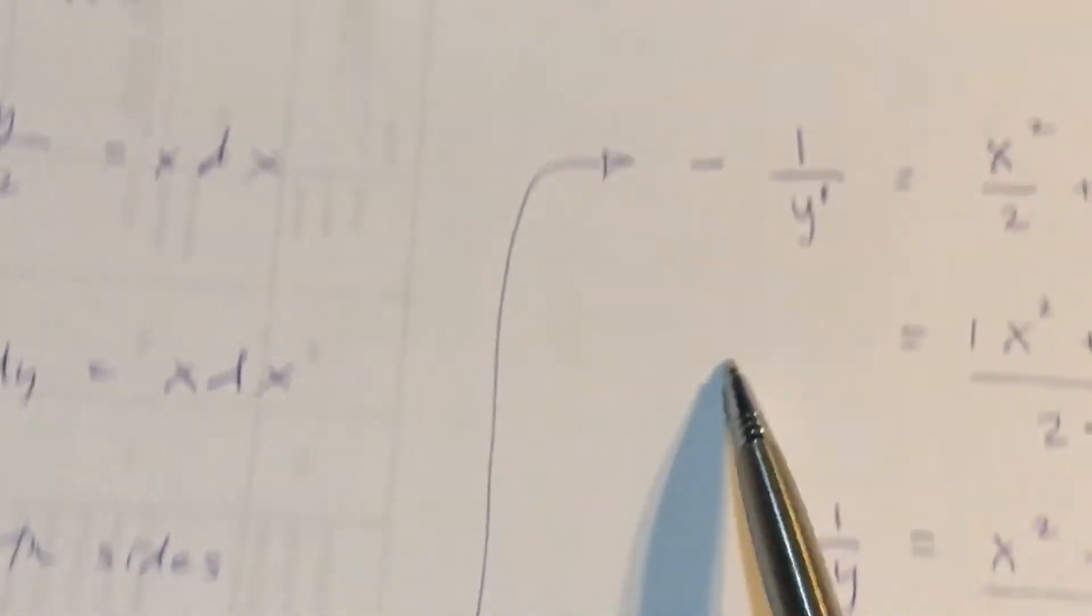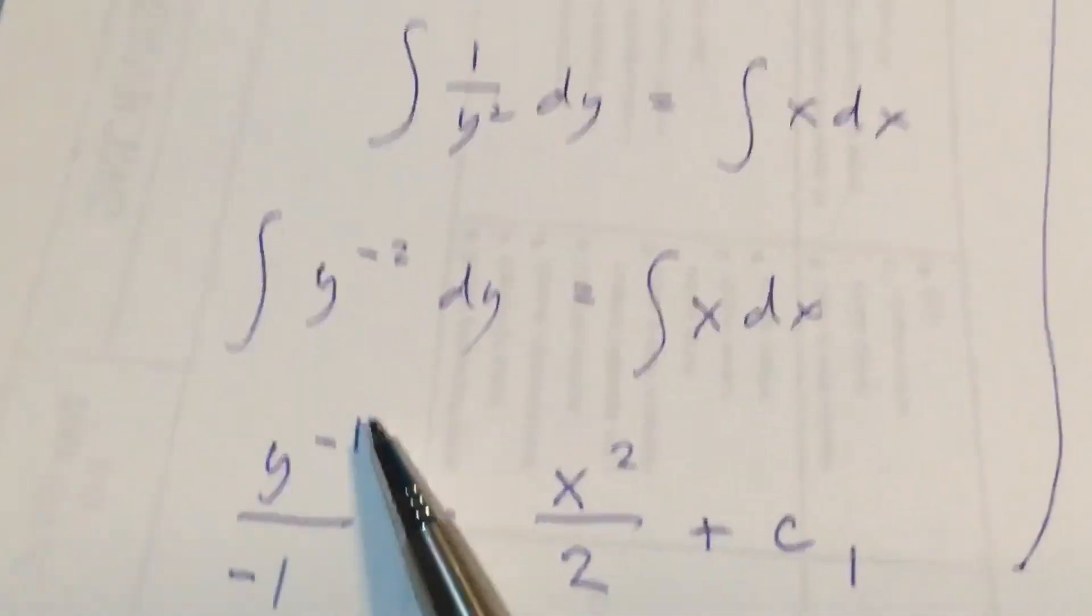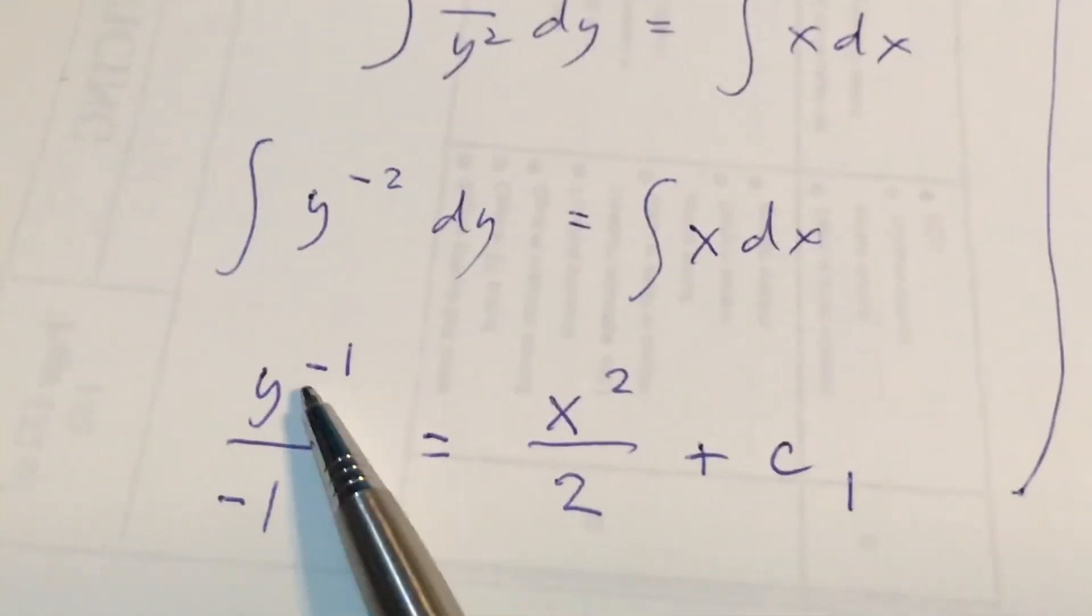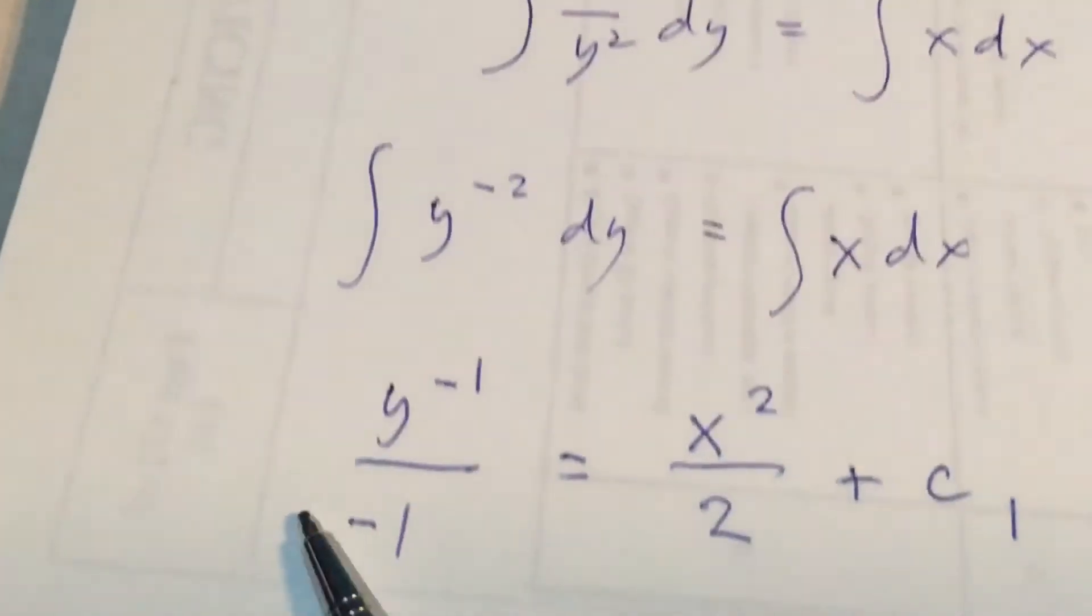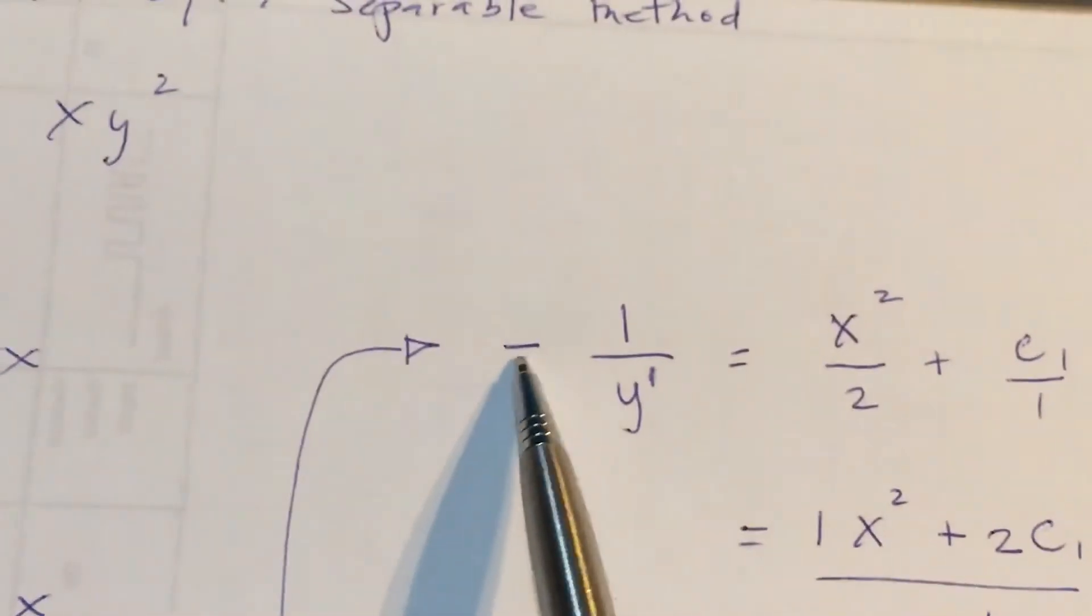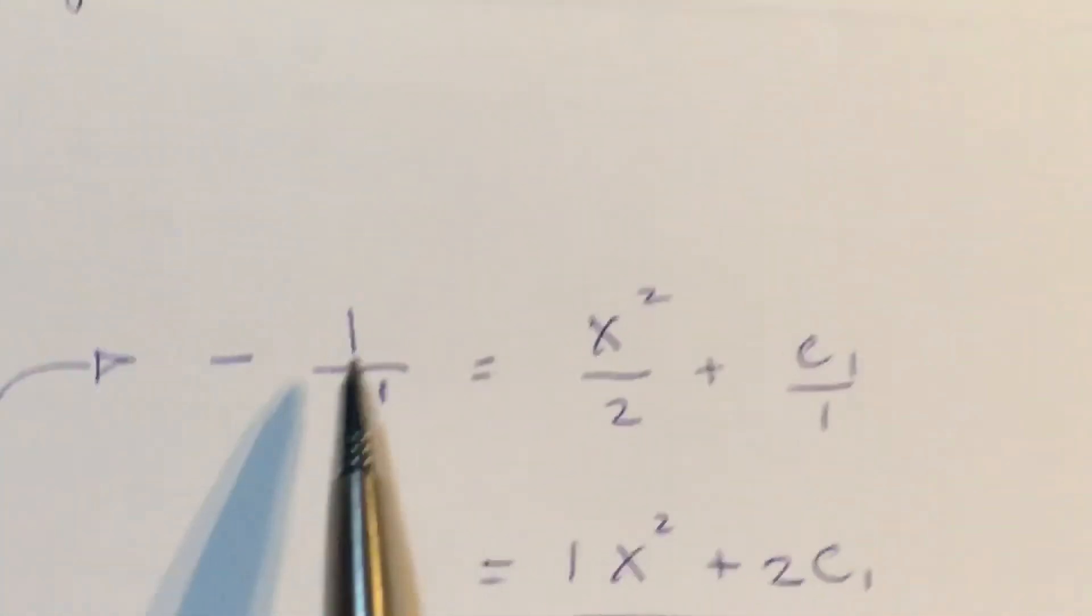In this step, we are going to flip the expression so that the negative 1 will be eliminated. And put the negative here, in front of the expression.